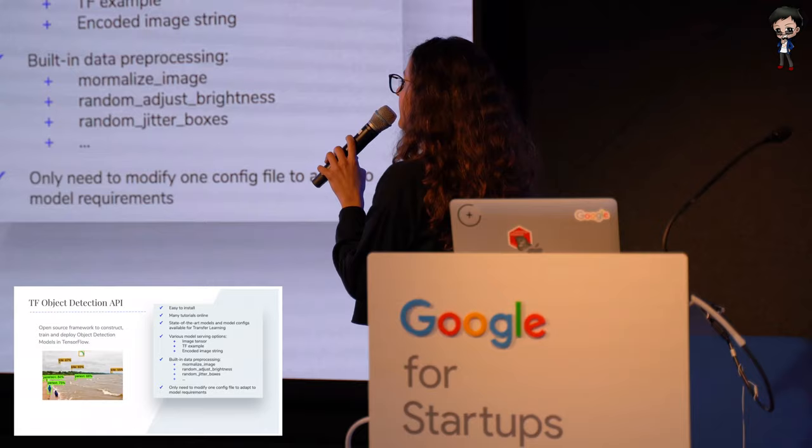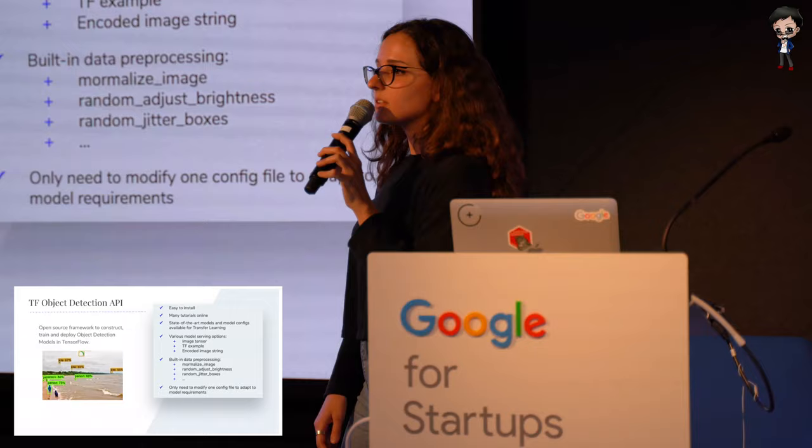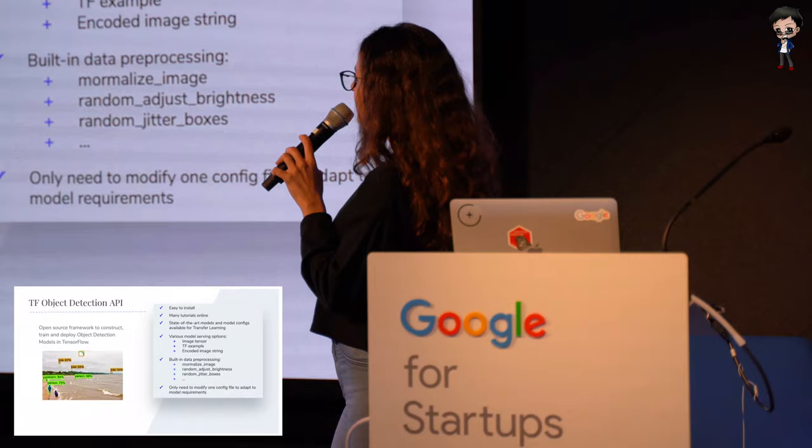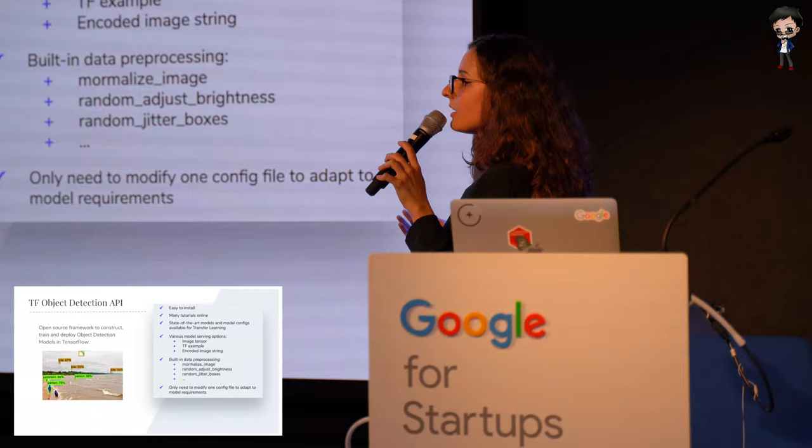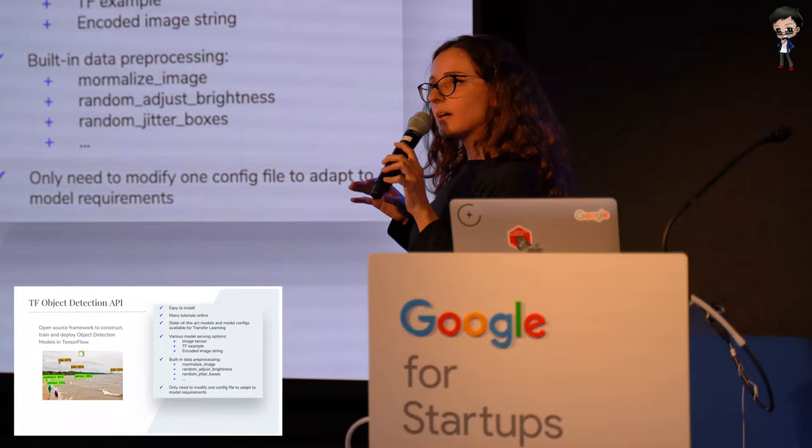Another cool thing is that it allows standard data pre-processing very straightforwardly — it can be normalization, jittering the bounding boxes, and some other augmentation. And it allows, for those of you who know TensorFlow Serving, to have different inputs for your model at serving time. You can give your image as an image tensor, as a TensorFlow Example, or as a stream. You can define all of these just by updating one config file.